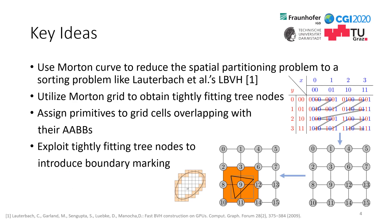The key idea of our paper is to reduce the spatial partitioning problem to a sorting problem using the z-order curve. We observe that the z-order curve inherently spans a grid. We assign primitives to spatial grid cells whenever their AABBs overlap those cells. In this way, we obtain tightly fitting tree nodes. We exploit these tightly fitting tree nodes to introduce a boundary marking of tree nodes.